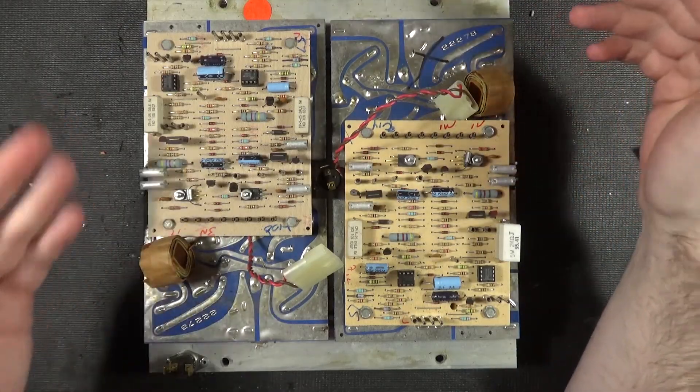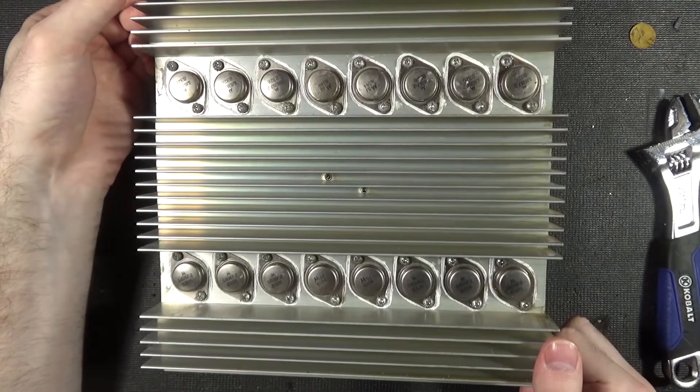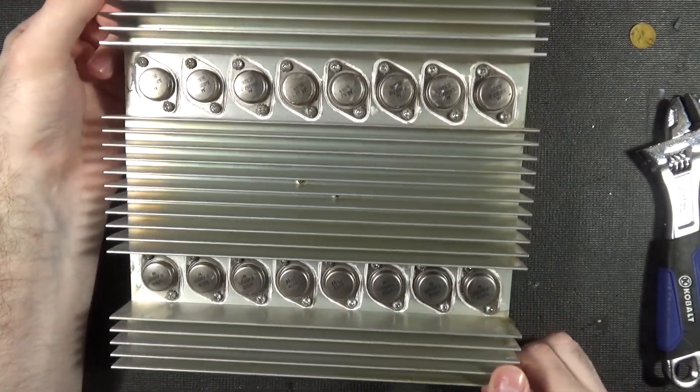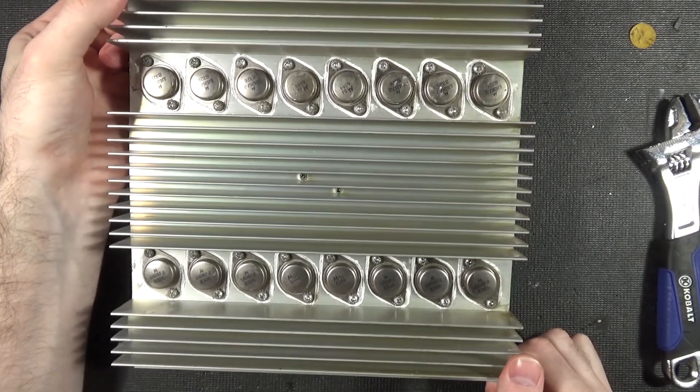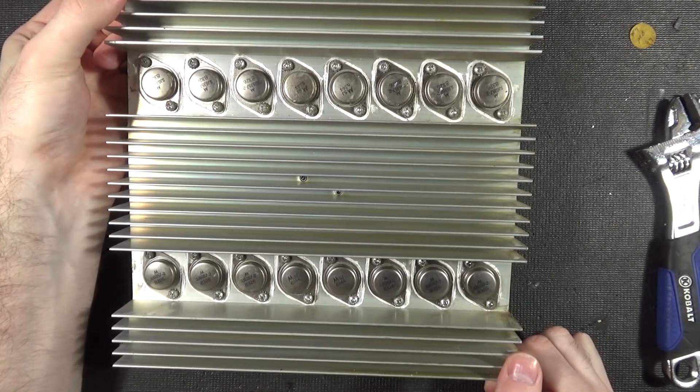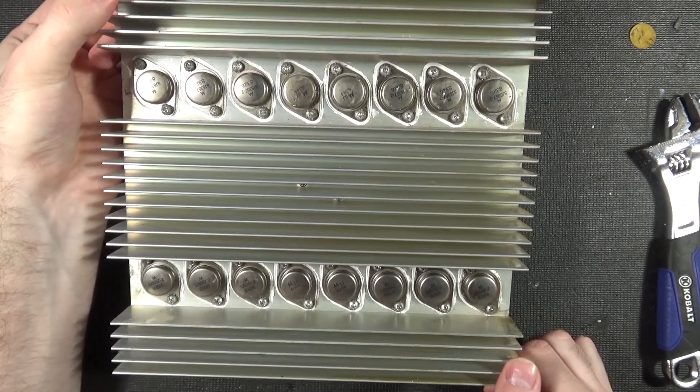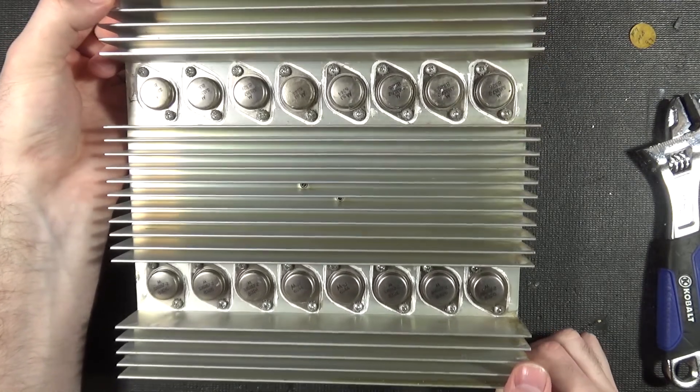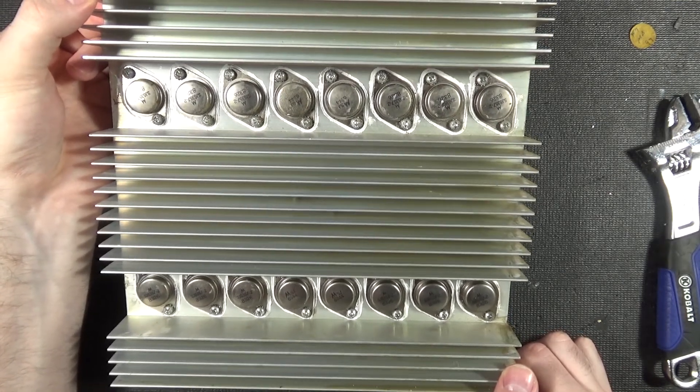You have this giant heat sink. We haven't seen anything that really has that much power involved yet until you flip it over. And of course you get all of those transistors. That is just a ton. Probably most of it's going into doing the amplification, but they might actually use some of these for power regulation. Don't quite know just to throw it on the board. But yeah, it's just a bunch. Imagine having to replace all of them.